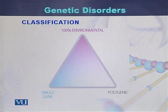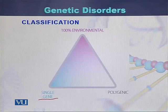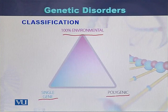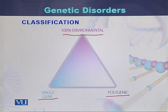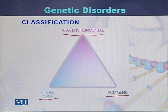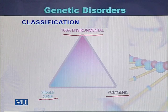Looking at the classification of genetic disorders, they can be classified into three forms: single gene-based disorders, polygenic disorders, and diseases that are purely 100% environmental. Single gene diseases are caused by mutation in a single gene. In polygenic diseases, two or more genes, or one gene combined with an environmental factor, jointly contribute to the incidence of a disease.